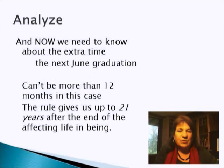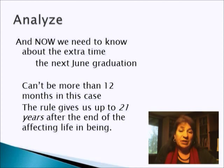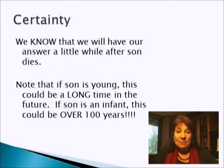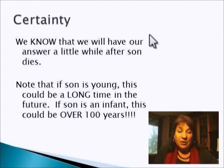We just need to know about that extra time until the next June graduation. How long is that going to be? Well, it couldn't be more than 12 months, assuming there's a June graduation every year. The rule gives us up to 21 years after the end of the affecting life in being. We're going to have our answer within a year. So this interest is valid, because it's going to vest for sure within a year of son's death — by the June following son's death. Notice that if son is someone who's very young, say an infant, that could be a really long time. So it's not the length of time per se, it's this lifetime plus a little bit.